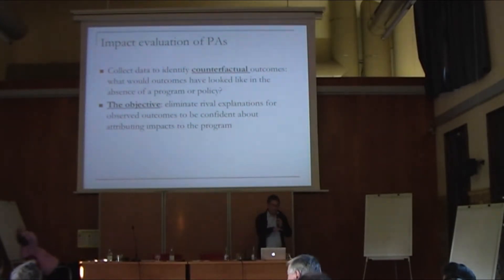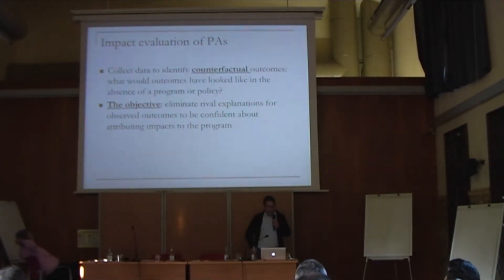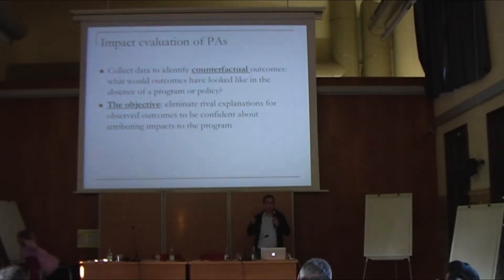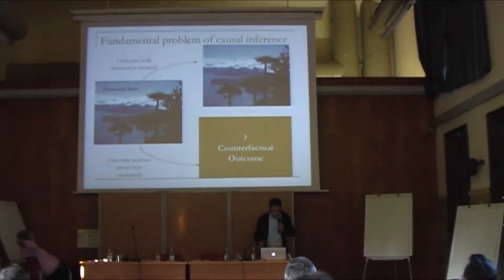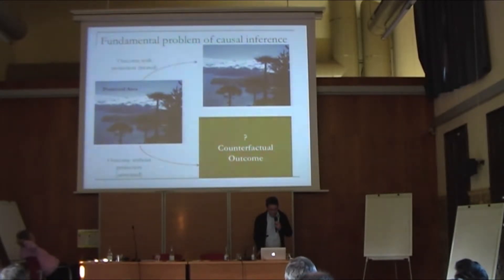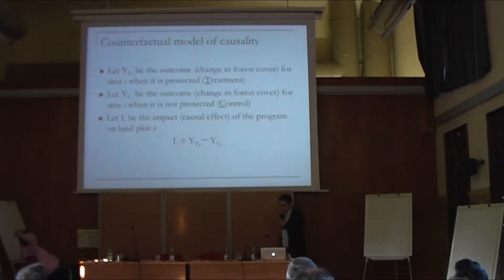Moving to impact evaluation of protected areas: what we really need to do is collect data and build a counterfactual scenario — the same thing as PSM, as Stefano was discussing. The question we need to answer is: how would outcomes have looked in the absence of the program or policy? The whole thing about impact evaluation comes down to two things: selection bias and building this counterfactual scenario. I'm going to briefly discuss partial identification and present more formally the classical Rubin-Roy model of causal effects.